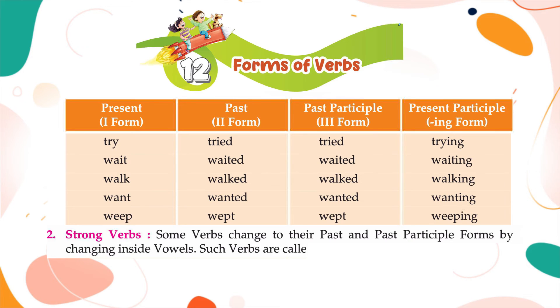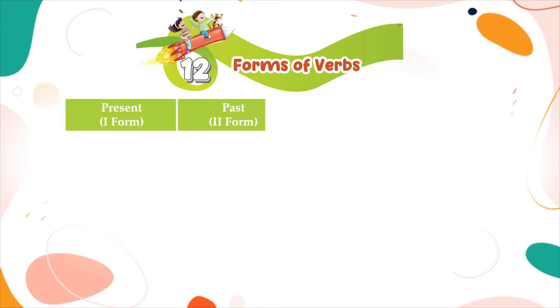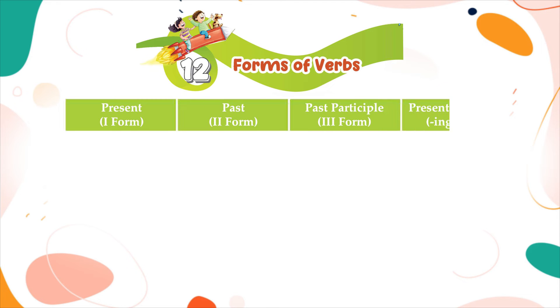Strong verbs: some verbs change to their past and past participle forms by changing inside vowels. Such verbs are called strong verbs. The columns are: present (first form), past (second form), past participle (third form), present participle (ing form).